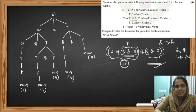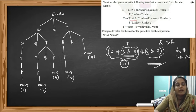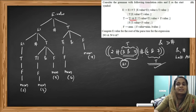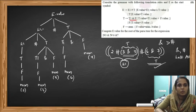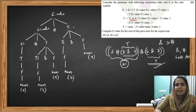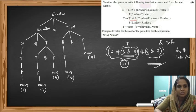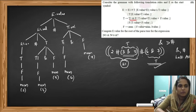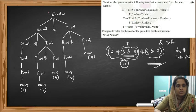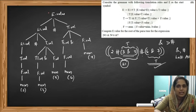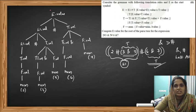In each node of the parse tree, instead of writing the symbol alone, we write dot value — because in SDT we are finding the values of the attributes. The attributes are E dot value, T dot value, and F dot value. These are synthesized attributes. Now we walk through the parse tree, and whenever we see a reduction, we apply the corresponding translation rule.